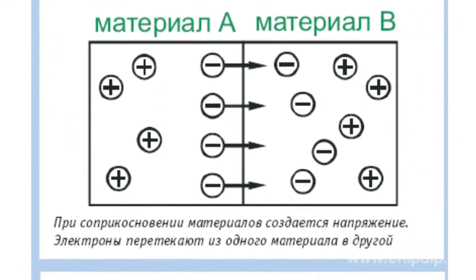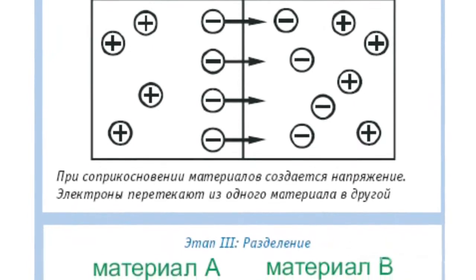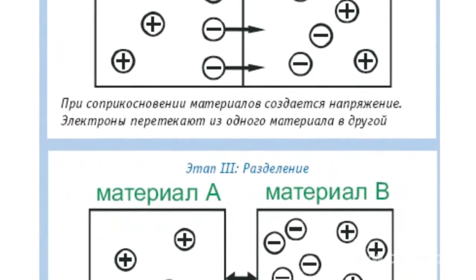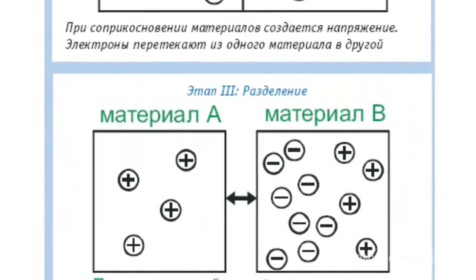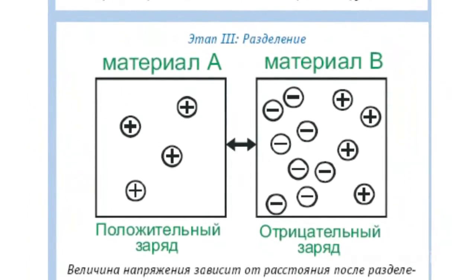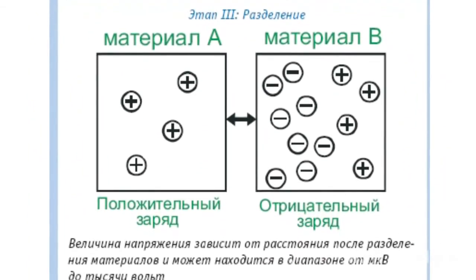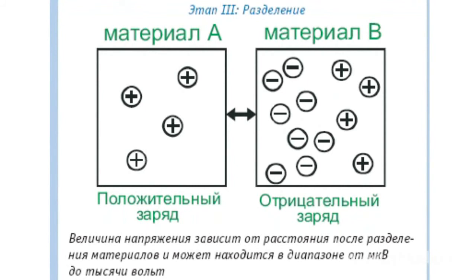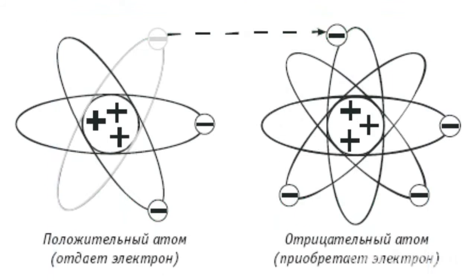Triboelectricity can also arise between metals and insulators, between two identical insulators, between liquid insulators, or between an insulator and a solid surface. Both bodies are electrified, and their charges are equal in magnitude and opposite in sign.